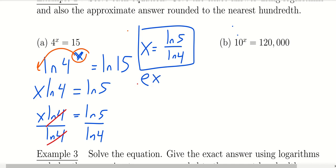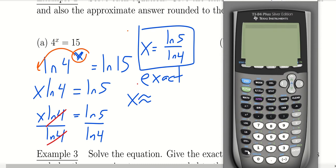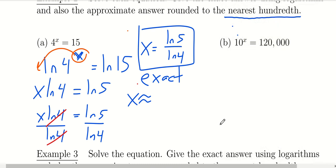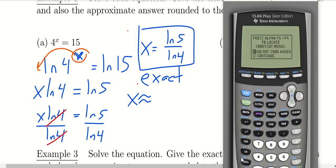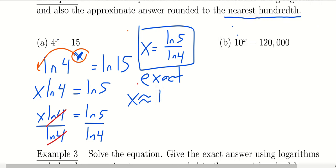For the approximate answer, we plug ln(15) divided by ln(4) into the calculator. The problem asks to round to the nearest hundredth. Computing ln(15) divided by ln(4) gives approximately 1.95. So x is approximately 1.95.